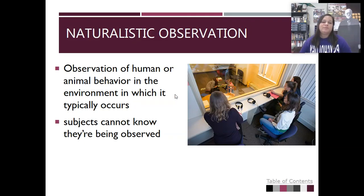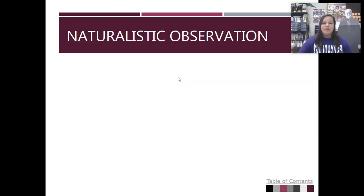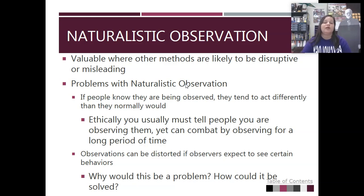The first of these is naturalistic observation, and it's pretty much what it sounds like — observing people or animals in their natural setting. The key thing is that the animals or people, whatever the subject is, cannot know they're being observed. Naturalistic observations are valuable whereas other methods can be more disruptive. The problem is that if people know they're being observed, they tend to act differently — they're going to be on their best behavior. But ethically, you're supposed to tell people if you're observing them, so it's a little bit difficult.